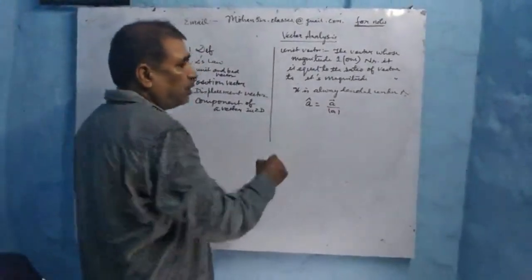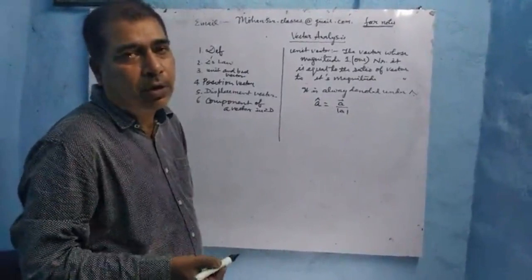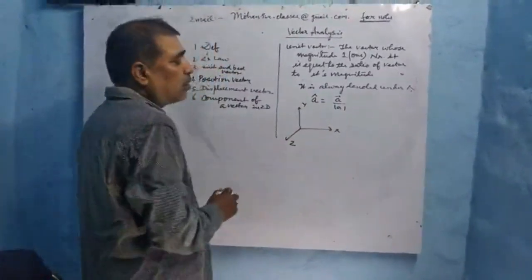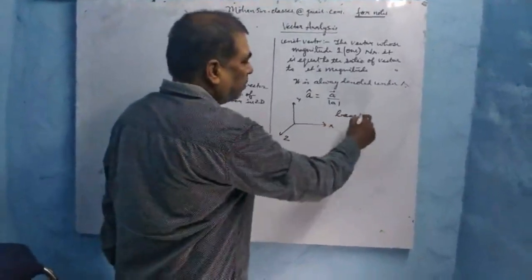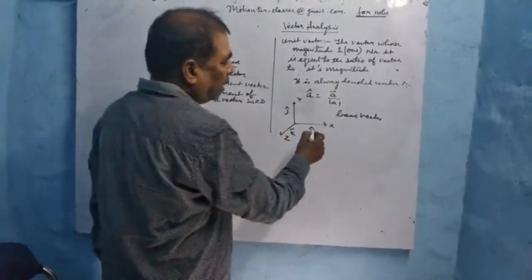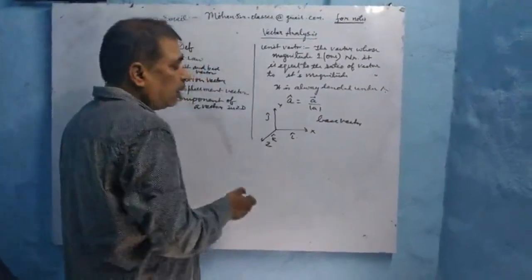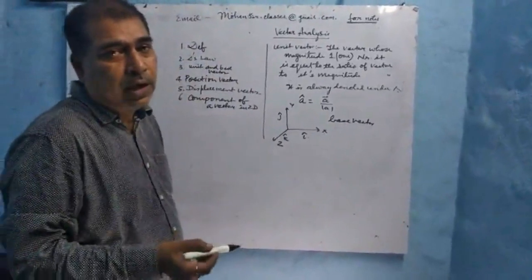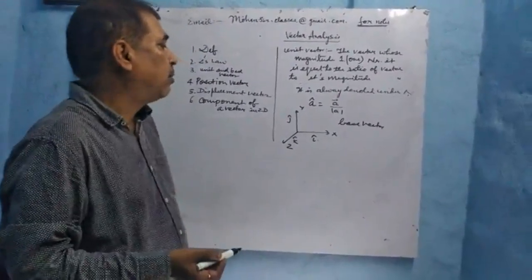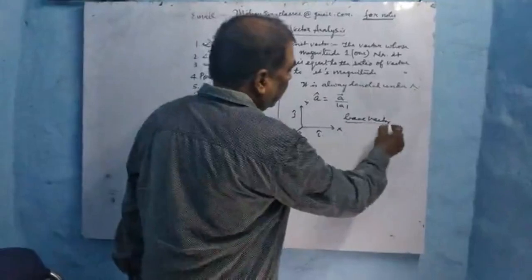If these vectors are represented along the x-axis, y-axis, and z-axis, then these unit vectors are called base vectors. They are represented by i, j, and k. i is represented along the x-axis, j along the y-axis, and k along the z-axis in the positive direction. For the negative direction, we take minus i along negative x-axis, minus j along negative y-axis, and minus k along negative z-axis.